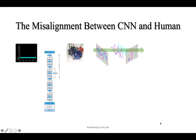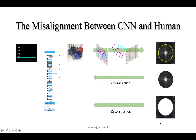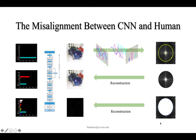We then map this image into its frequency domain with Fourier transform, select a radius, and cut the domain into its low-frequency and high-frequency counterparts, and reconstruct the images. Finally, we feed these images back to the model and get these prediction results.